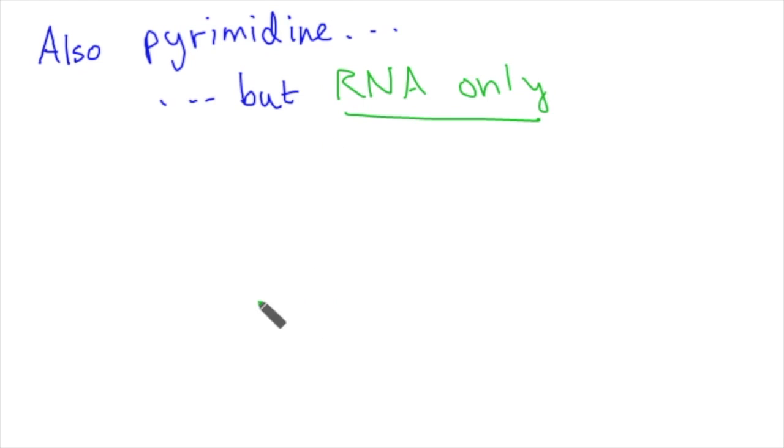Next, we have uracil, which is only for RNA. So it's also pyrimidine, but I just want to make sure you understand this is only used in RNA. DNA does not have this. And this takes the place of thiamine in RNA.